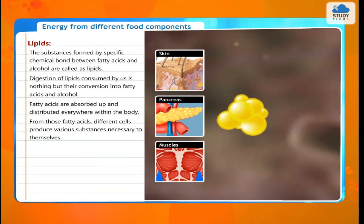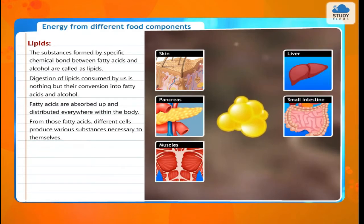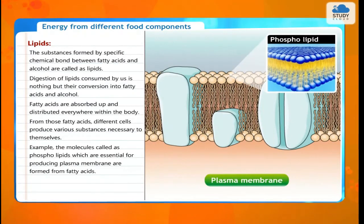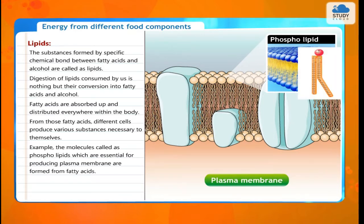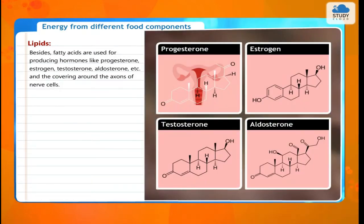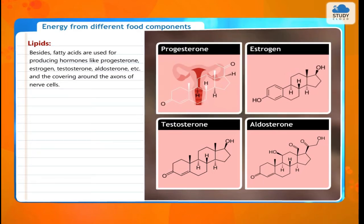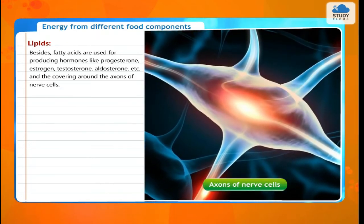From those fatty acids, different cells produce various substances necessary to themselves. For example, the molecules called phospholipids, which are essential for producing the plasma membrane, are formed from fatty acids. Besides, fatty acids are used for producing hormones like progesterone, estrogen, testosterone, aldosterone, and the covering around the axons of nerve cells.